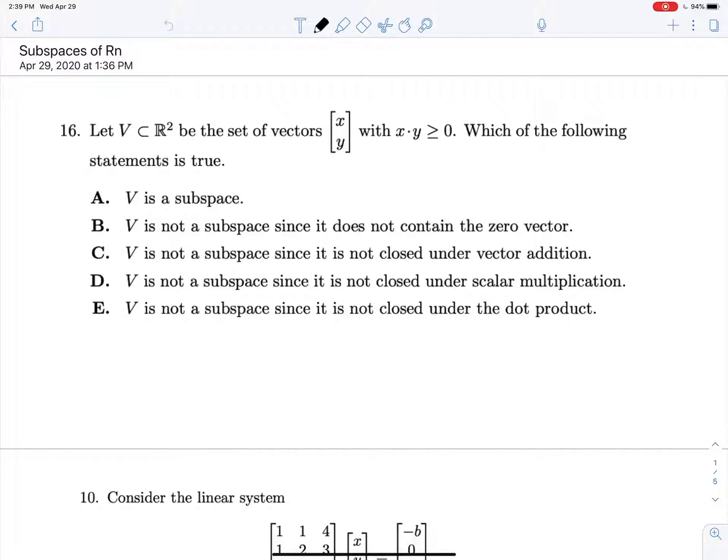What properties we actually have to fulfill for a set to be considered a subspace. So as B is saying, we have to contain the zero vector, we have to be closed under vector addition, meaning that if we take any two elements of our set and add them together, we will still end up with another element of our set. And then D, we have to be closed under scalar multiplication. So multiplying any vector by a constant will give us another element of that set.